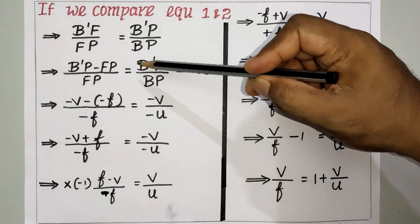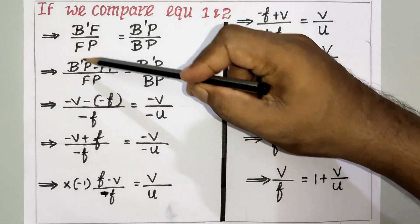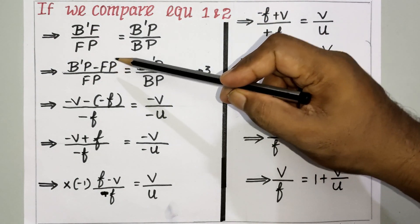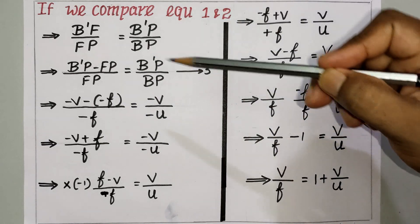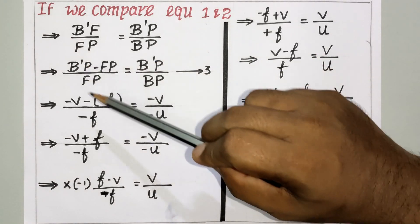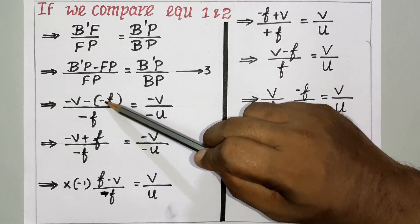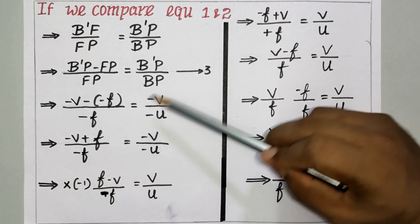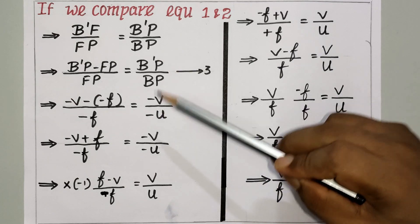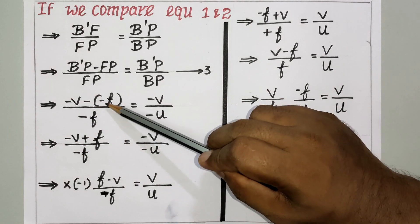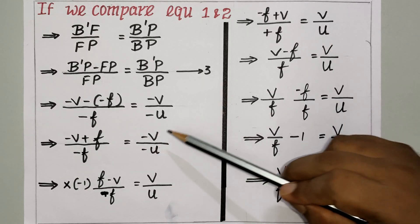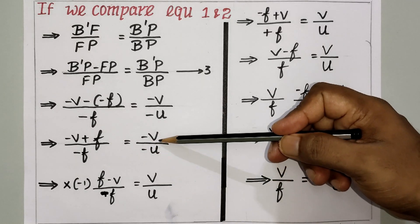We extend by writing B'F = B'P − FP. Substituting the sign-convention values: B'P = −v, FP = −f, BP = −u. So equation 3 becomes: (−v − (−f)) / (−f) = (−v) / (−u), which simplifies to (−v + f) / (−f) = v / u.